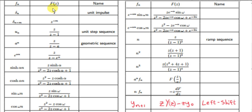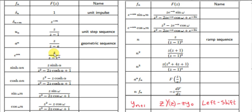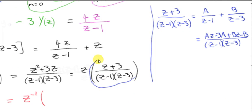We need to find a sequence whose z-transform is given by this expression. If you go to the table, you won't find anything like that directly, so we need to read the table in reverse — looking at the z-function column and reading out the corresponding sequence. We're looking for expressions of the form z over z minus a, because that's what this expression is built up from. So we need to separate this out into its partial fractions.